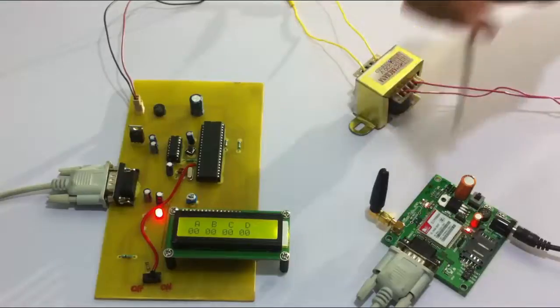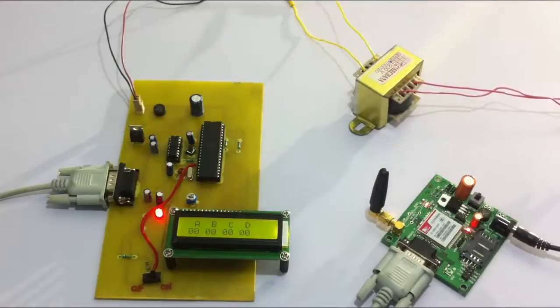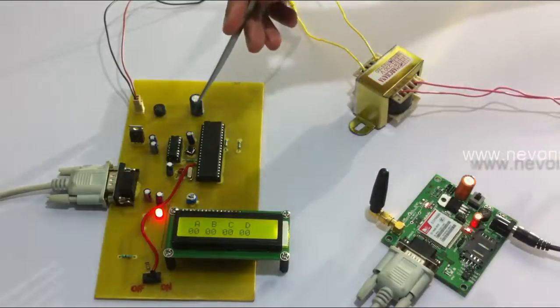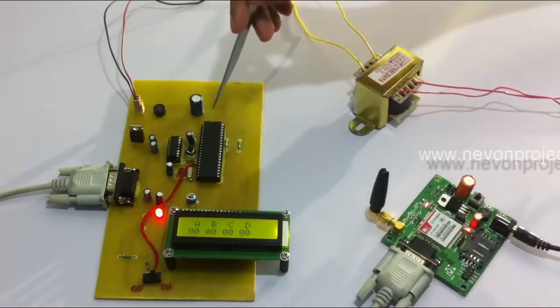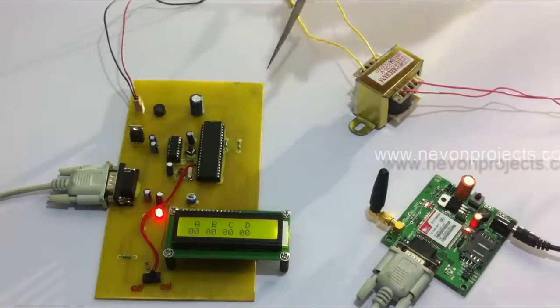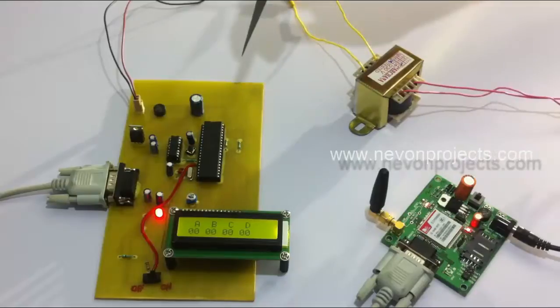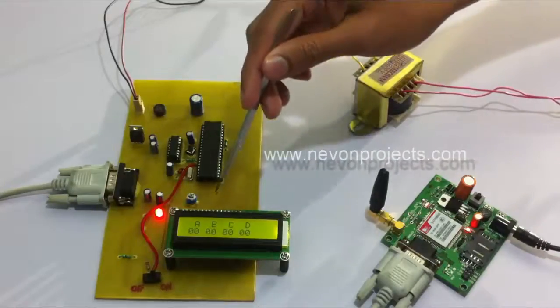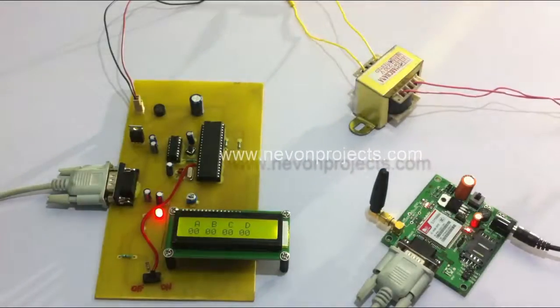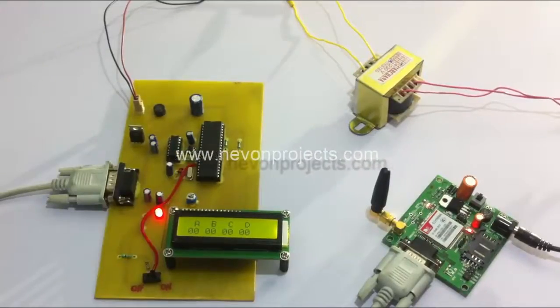Then we use a GSM modem to receive SMS messages used for voting from the user. The GSM modem is in turn connected to the main circuit to an H0F family microcontroller. It's also used to interface to the LCD screen which is used to display the votes and the voting process.